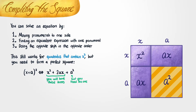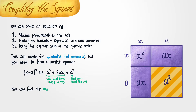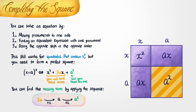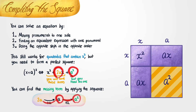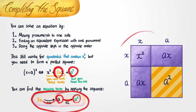Now if you actually try solving a quadratic, you can always just draw this square to find out what the missing term is. But you can also do it another way: you can take this 2a, divide by 2 to get a, then square it to get a squared — which is the missing term. It's up to you whether you want to use this sequence or just draw the picture to find the missing term.